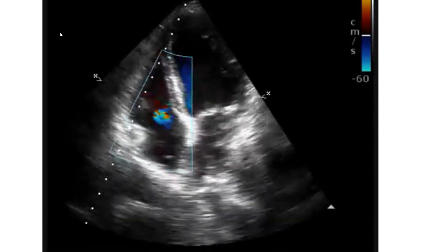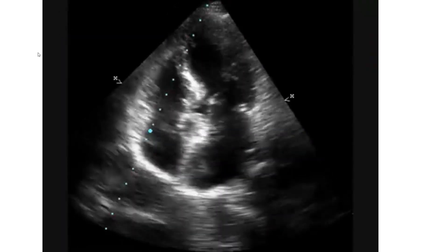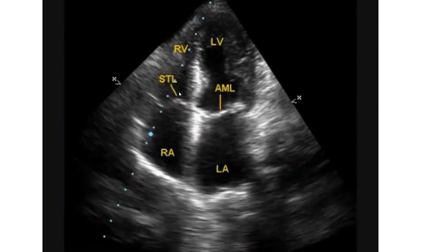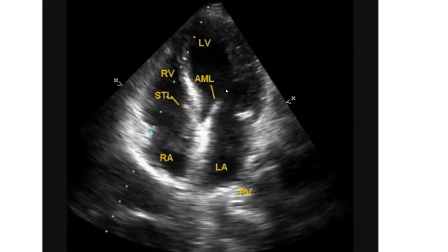This is an echocardiogram — an ultrasound imaging of the heart. You can see the heart contracting here very well. This is the septal tricuspid leaflet and this is the anterior mitral leaflet, seen here in the open position.